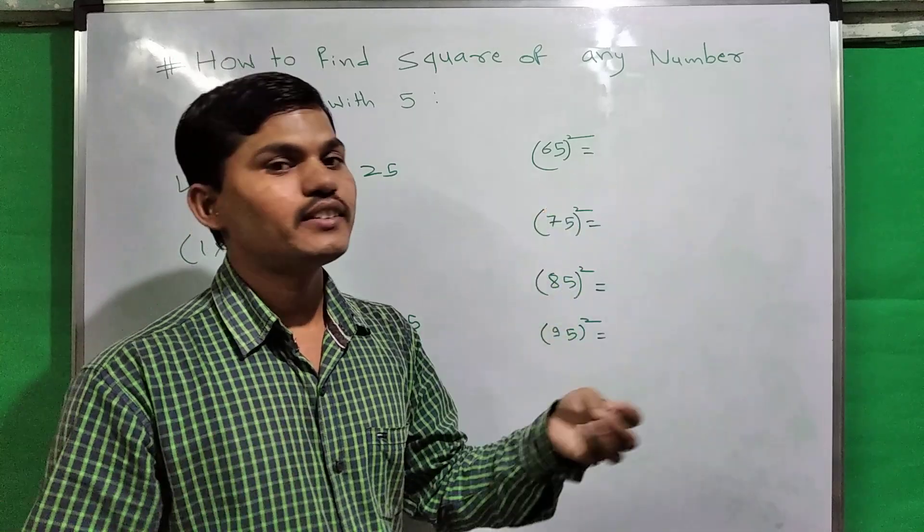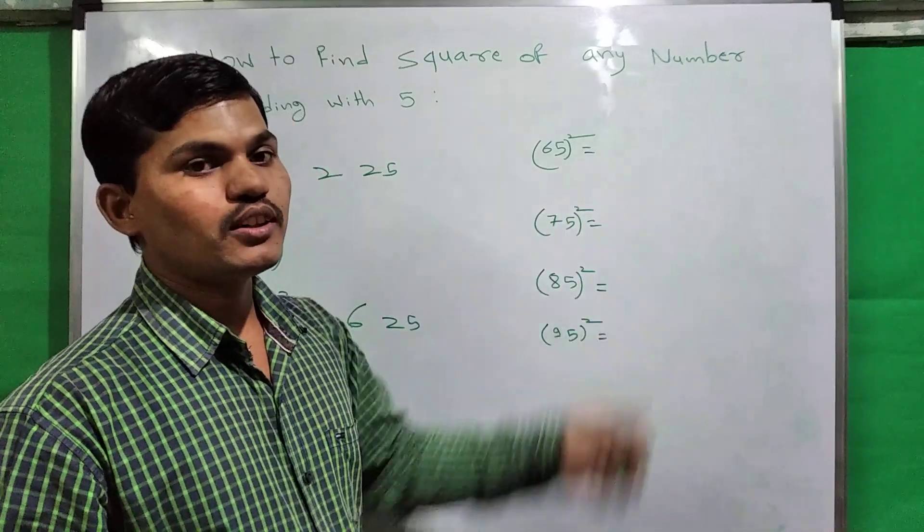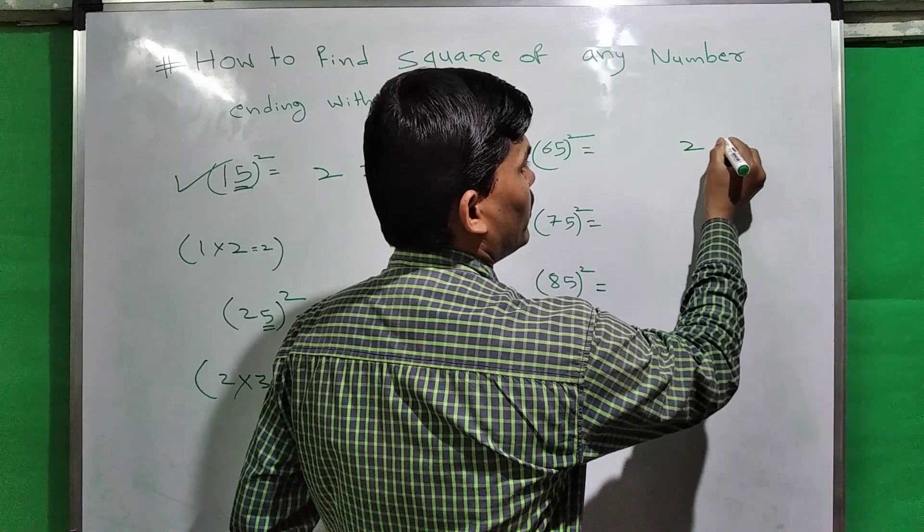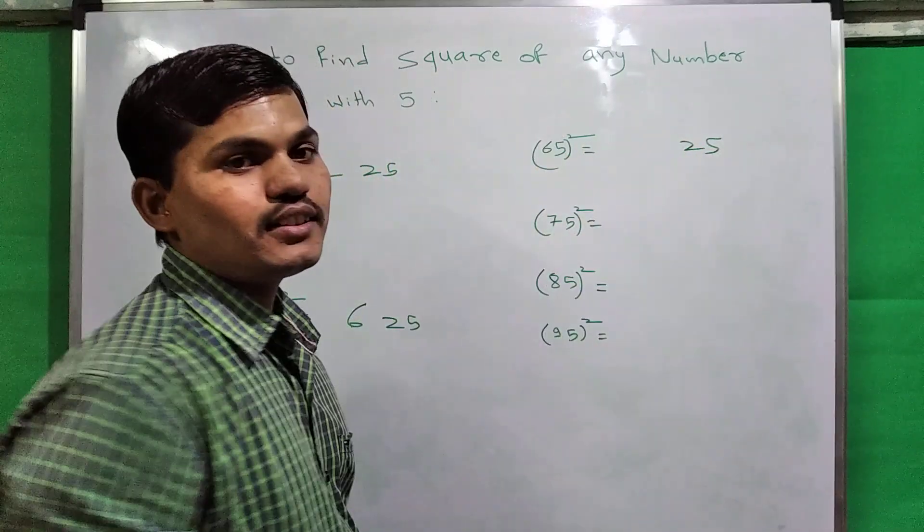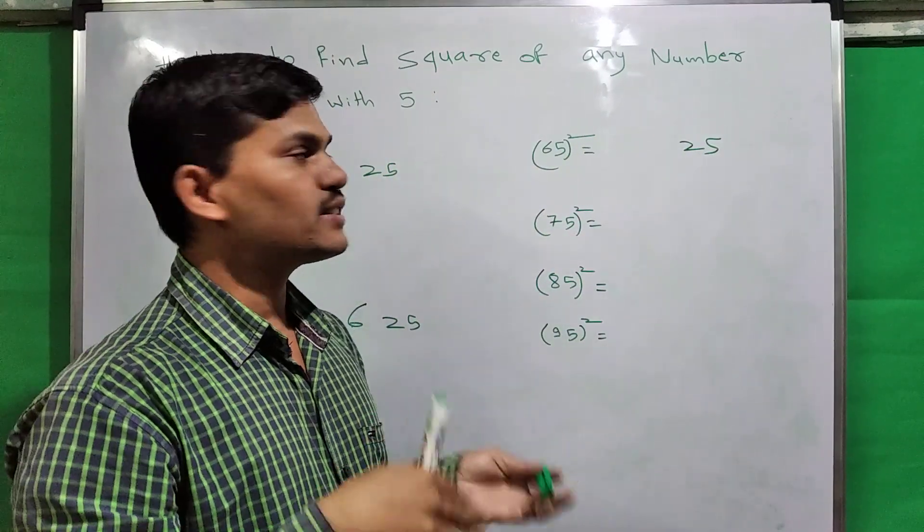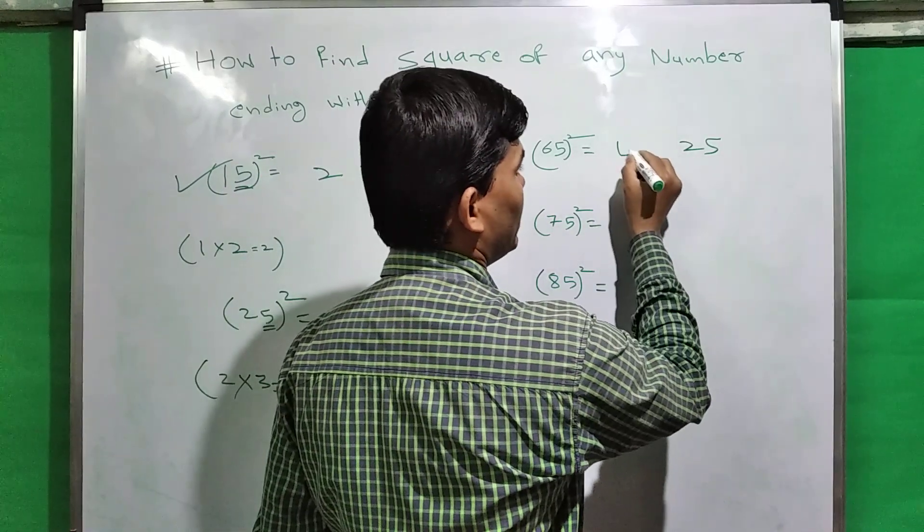Now take another example: 65 square. First write down the square of 5: 25 here. Take the next number of 6, which is 7. 6 times 7 is 42. Write down here: 4225.